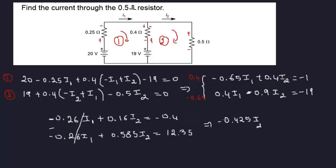So minus 0.4 minus 12.35, minus 12.75, so this is equal to minus, so we know our current will be positive. So I2 would be, that divided by 0.425, 30, finally.